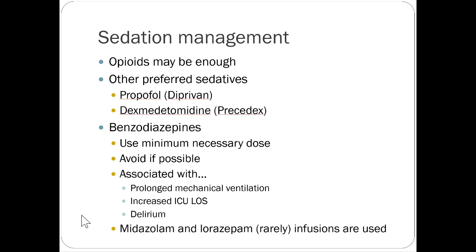When benzos are used, they're given alongside a continuous opioid infusion — midazolam and fentanyl together provide synergy so you need less of each. Benzodiazepines are reserved for specific cases: intractable seizures responding well to continuous infusion, or alcohol withdrawal patients at risk for seizure, where the drug serves dual purposes — sedation and seizure prevention. We use them more cautiously now than in the past.